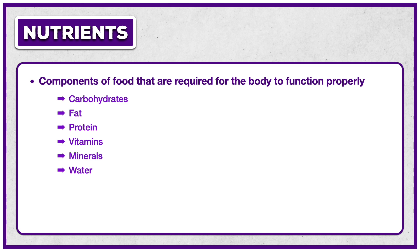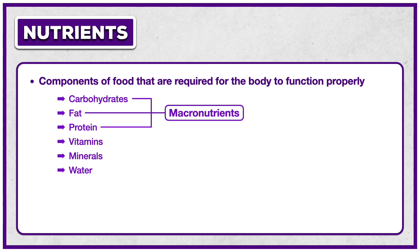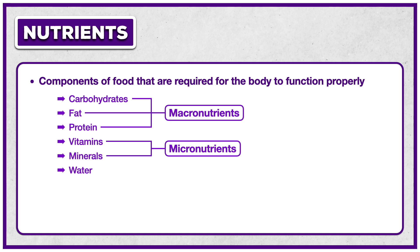The six classes of nutrients are carbohydrates, fat, protein, vitamins, minerals, and water. Collectively, carbohydrates, fat, and protein are called macronutrients, meaning they are nutrients needed in large quantities. The vitamins and minerals are called micronutrients. Even though water is needed in large quantities, it's not typically listed as a macronutrient and is usually found in a separate category. Future chapters are dedicated to each of these classes.